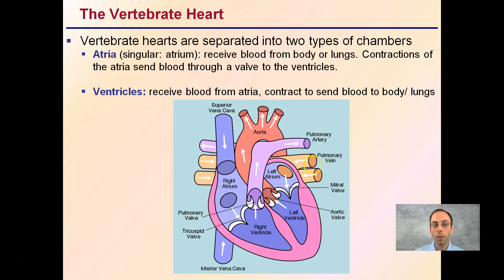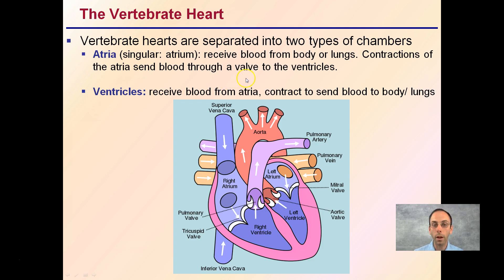The vertebrate heart is separated into two types of chambers. We have the atria — or singular atrium — as you see here: our right atrium and left atrium. They receive blood from the body or the lungs, and contractions of the atria send blood through a valve to the ventricles.